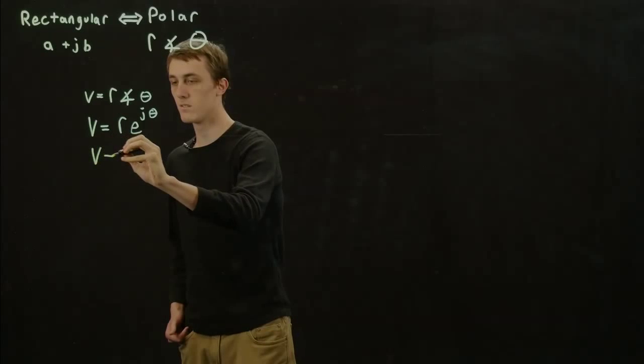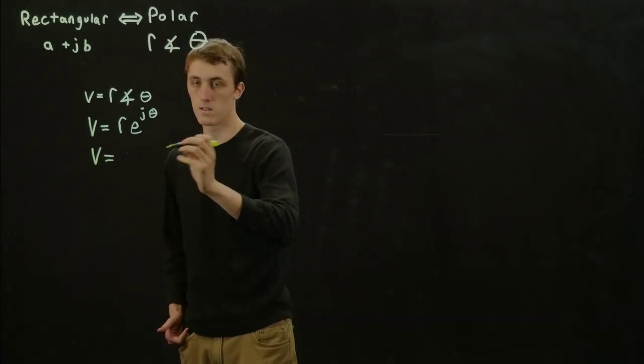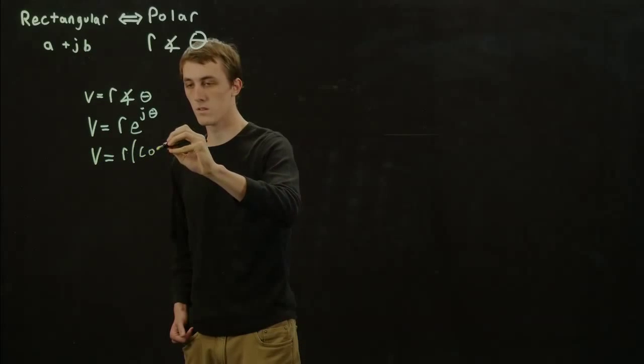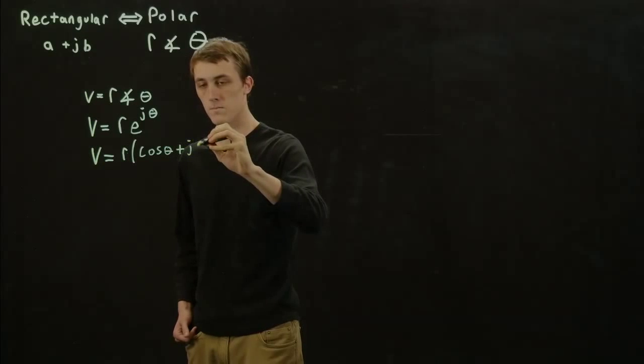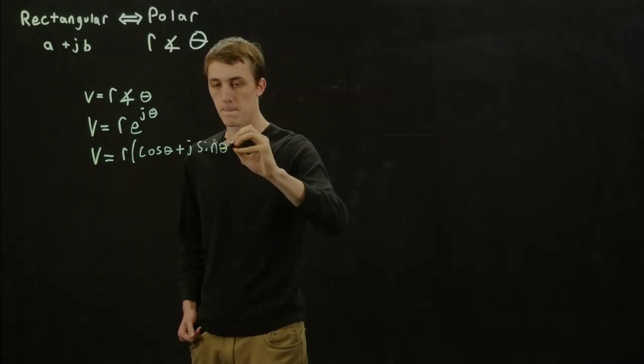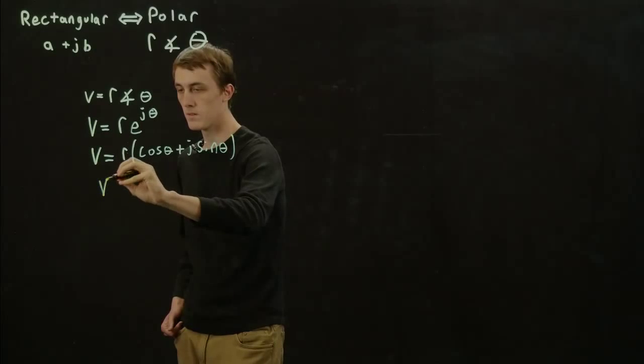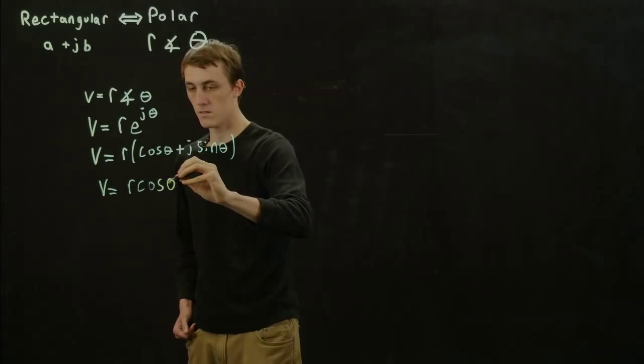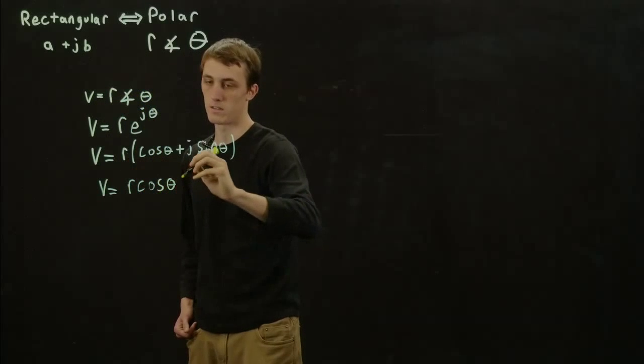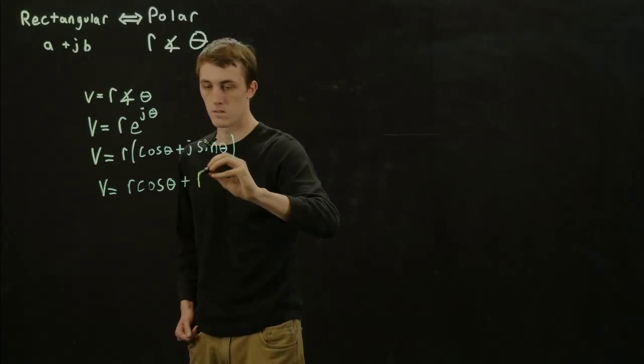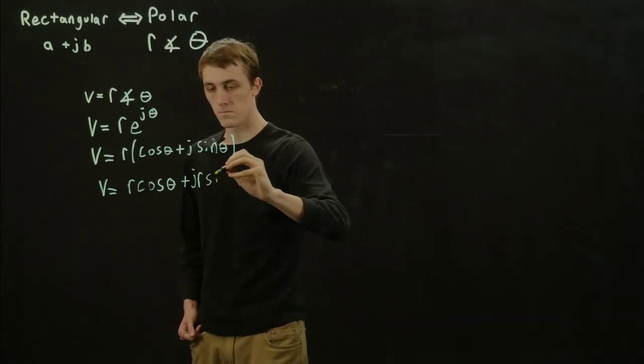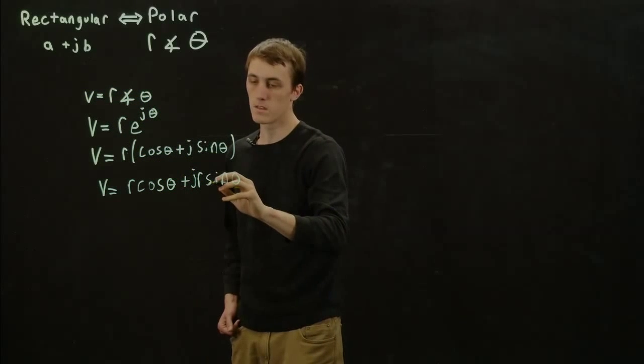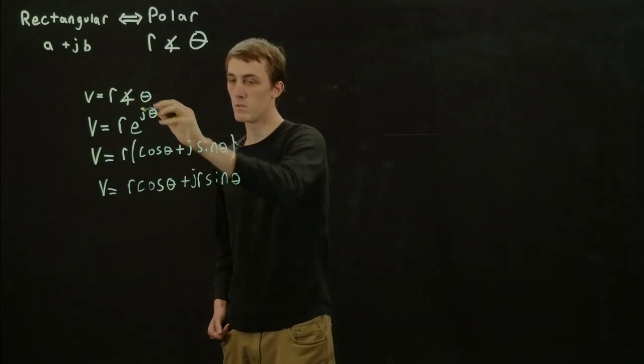So this is how we convert into rectangular using Euler's identity. Now when we distribute the R, we end up with this actually already in rectangular form with A equal to R cosine theta and B equal to R sine theta, because we pull the J out.